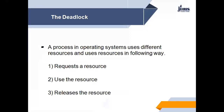A process in an operating system uses different resources in the following way: a process requests a resource, uses the resource, and then releases the resource. If a particular process requests a resource which is occupied by another process, it cannot get that resource. As mentioned, a process requests a resource but it is not available at that time, so the process enters a wait state. Waiting processes may never again change state because the resources they requested are held by other waiting processes.